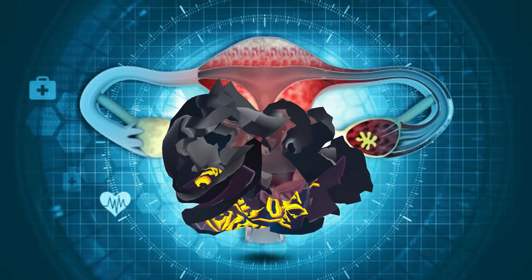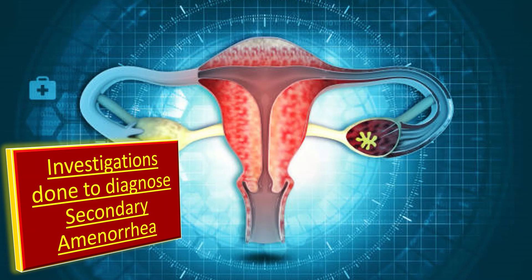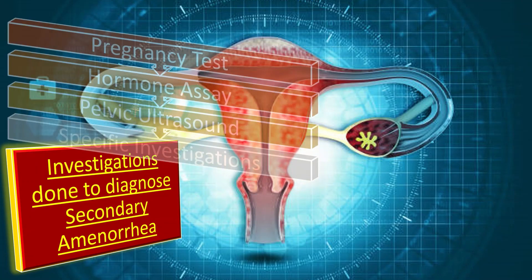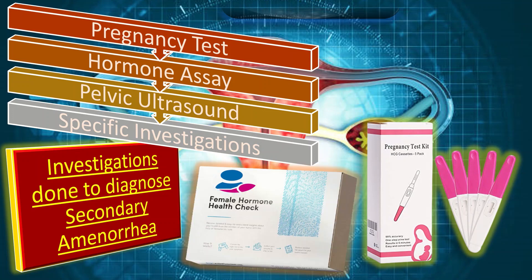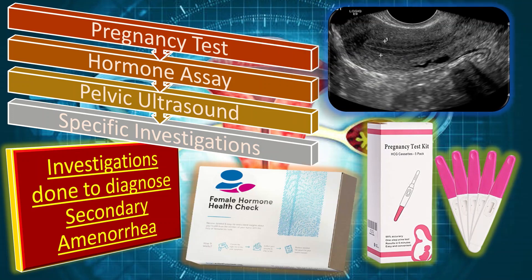So what investigations are done to diagnose a case of secondary amenorrhea? Those include: first, the pregnancy test; secondly, hormone assay; thirdly, pelvic ultrasound; and fourthly, specific investigations. By specific investigations we mean the type of tests which are done to diagnose a certain gynecological condition causing secondary amenorrhea, based upon the overall clinical presentation of a patient.